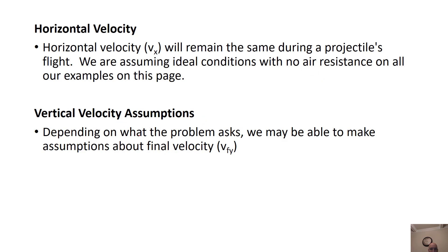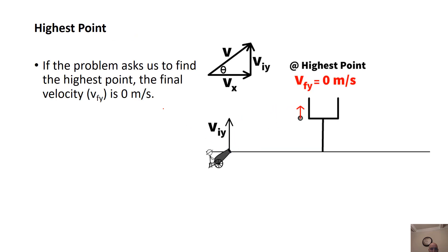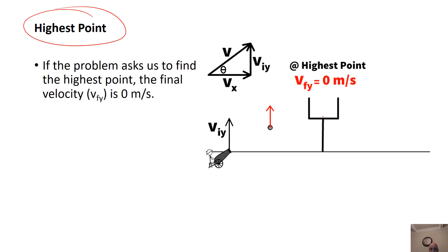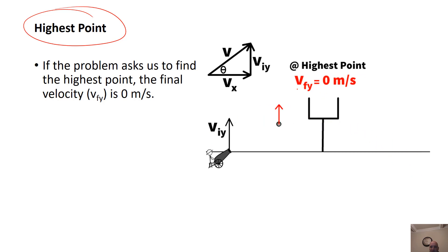We're going to be able to make assumptions for VFY in some problems, but not every problem — you have to recognize when you can. The first type where you can make an assumption is if you're trying to get to the highest point. The velocity in the Y-axis is going to stop at the top, so it might start with a VY, but at the highest point, VFY is going to be zero.